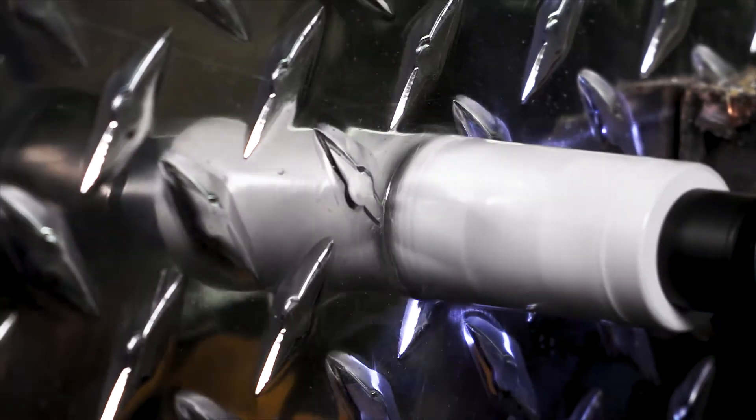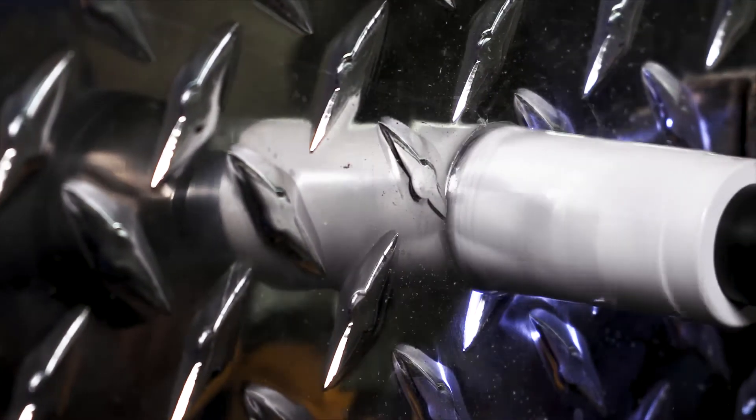Drill America bi-metal hole saws need just one pass to cut through studs. Drill America bi-metal hole saws cut faster, smoother, and without as much vibration due to its variable pitch teeth.